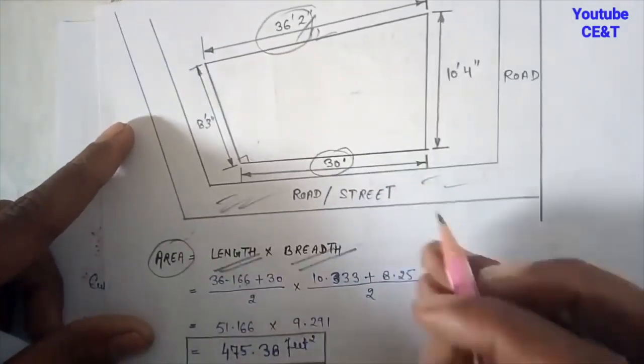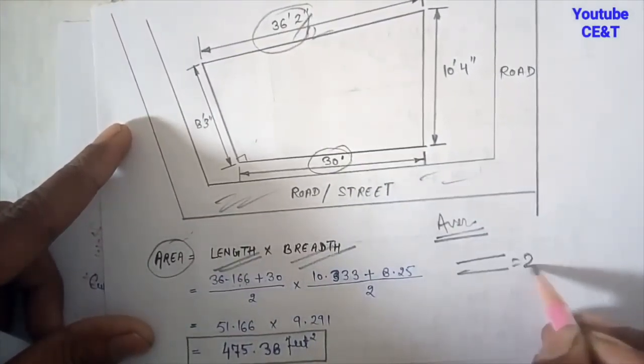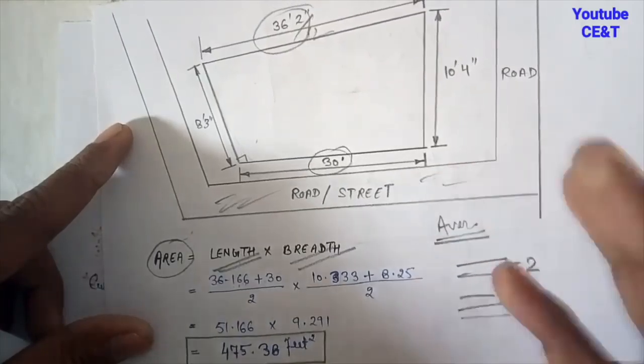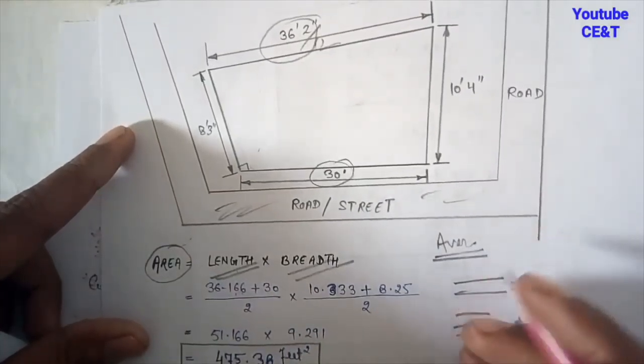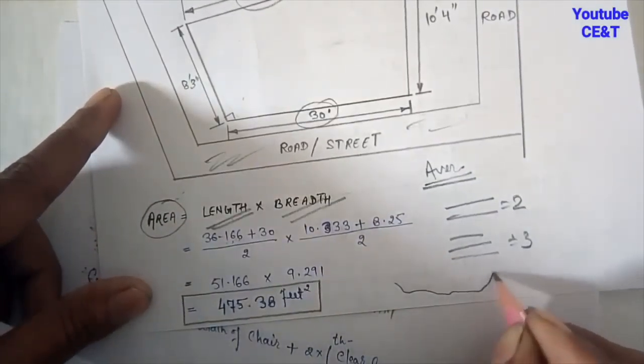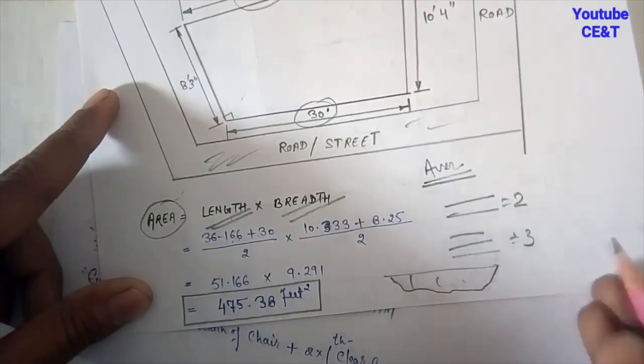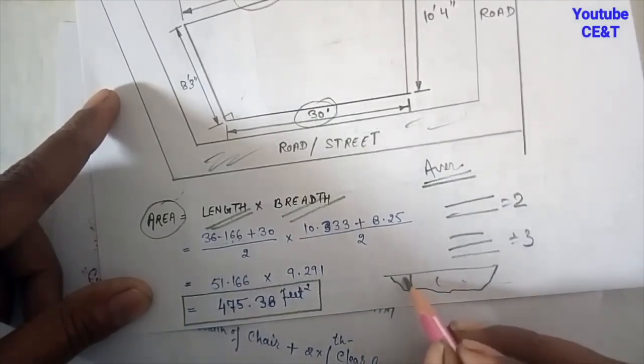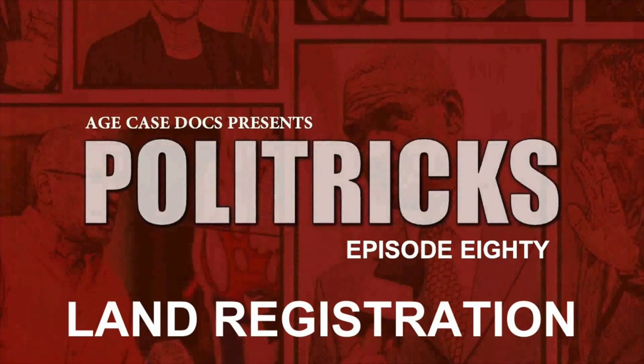So this is how the government have been setting up and they created this Land Registration Act in 2002, knowing full well that in the future everything will be digitalized and put onto something like what it's going to be put on now, which is the blockchain.